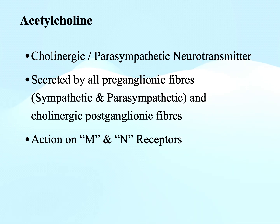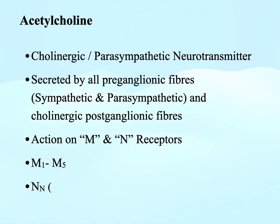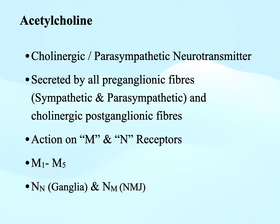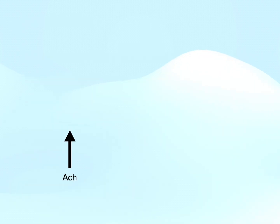Muscarinic receptors are subdivided into M1 up to M5, and nicotinic receptors are of two types: Nn present on the ganglia and Nm present on the neuromuscular junctions. Now we will see the effect of acetylcholine on blood pressure.